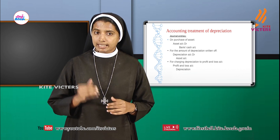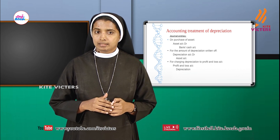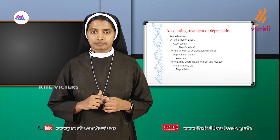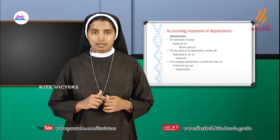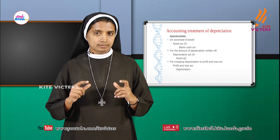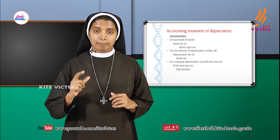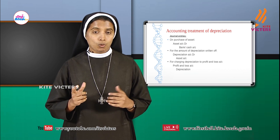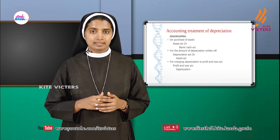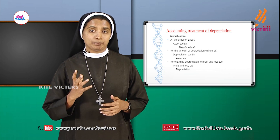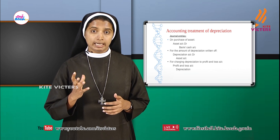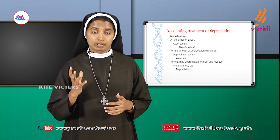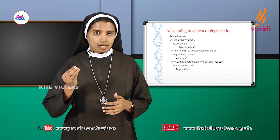For the amount of depreciation written off: depreciation is an expense. When an expense increases, it will be debited. So the journal entry is depreciation account debit to asset account.